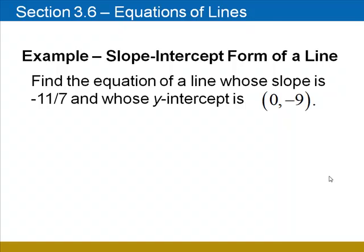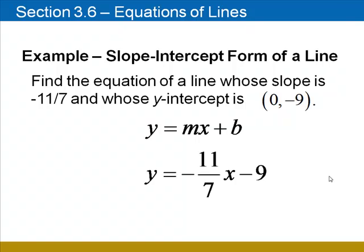Find the equation of a line whose slope is negative 11 sevenths and whose y-intercept is 0, negative 9. We'll use the slope-intercept form, substituting negative 11 sevenths, the slope, for m, and negative 9, the y-coordinate of the y-intercept, for b. The equation is y equals negative 11 sevenths x minus 9.